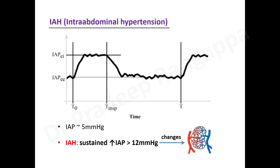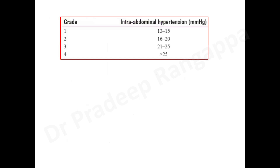The reason it has to be sustained is that it should lead to changes in the microcirculation at the tissue level. Sustained rise causing compromise in microcirculation is what we call intra-abdominal hypertension. There are different grades: Grade 1 is 12–15, Grade 2 is 16–20, Grade 3 is 21–25, and Grade 4 is more than 25 mmHg.